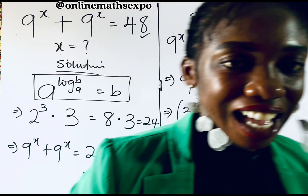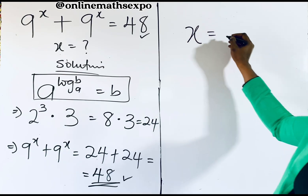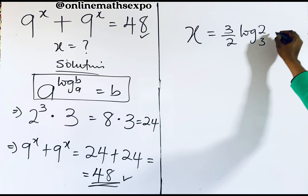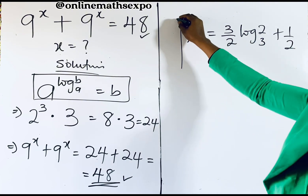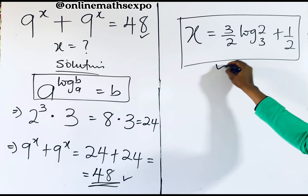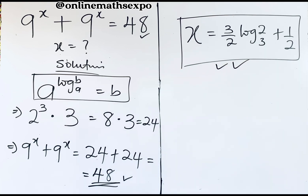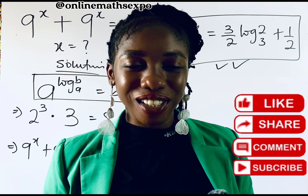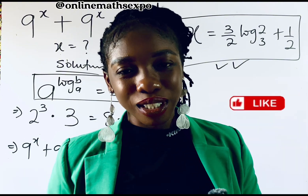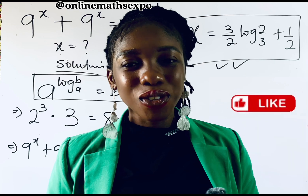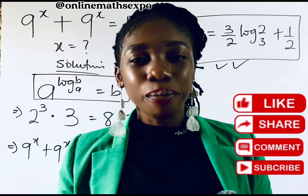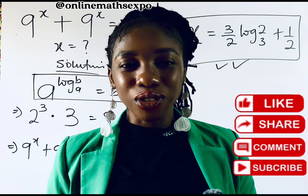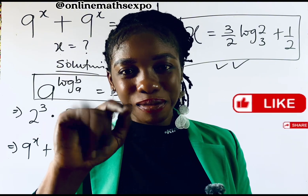So x equals 3 over 2 times log base 3 of 2, plus one half, is absolutely correct. I hope you learned something today. Don't forget to give this a like, share with your friends, hit that subscription button if you're new to the channel, and let us know how you feel or your own method of solving this in the comments. See you in our next class. Bye-bye.